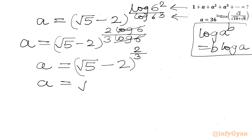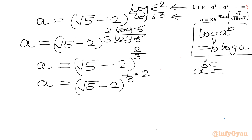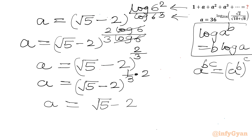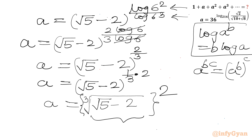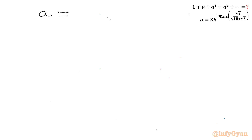We can rewrite (√5 − 2)^(2/3) as (√5 − 2)^(1/3) whole squared, using the property a^(bc) = (a^b)^c. So a = k² where k = ∛(√5 − 2), the cube root of (√5 − 2).